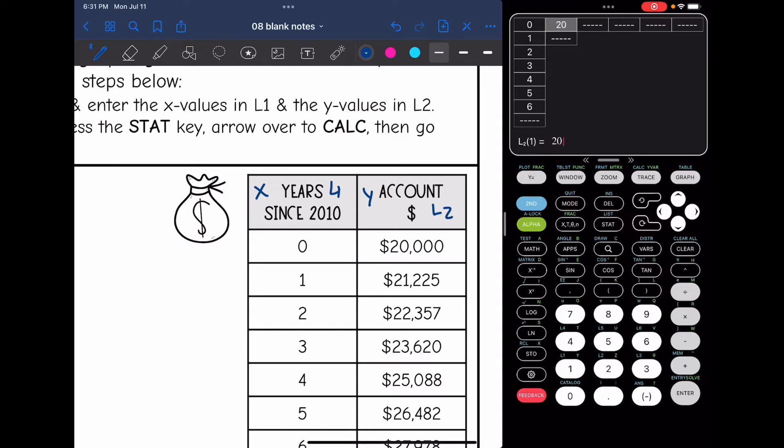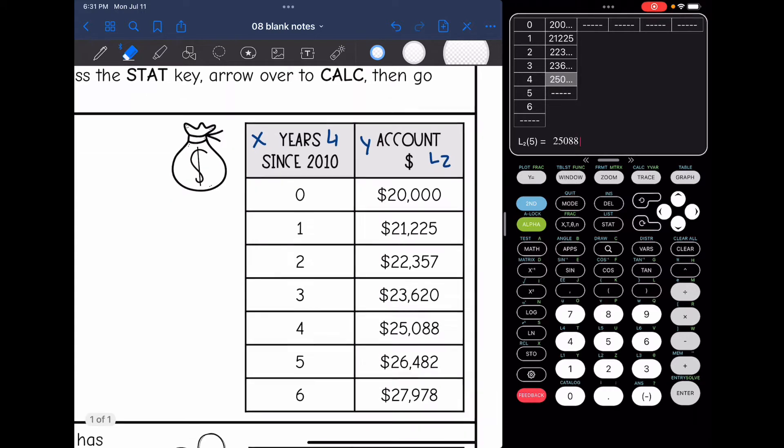And then in L2, I will put all of the Y values or the amount of money. So that would be 20,000, 21,225, 22,357, 23,620, 25,088, 26,482, and 27,978.